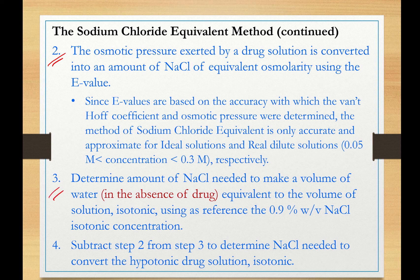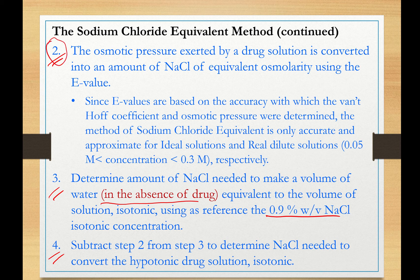In Step 3, we are going to determine the amount of sodium chloride needed to make a volume of water — equivalent to the volume of that solution, essentially in the absence of drug — isotonic, using isotonic saline as a reference. In Step 4, we are going to determine how much sodium chloride is needed to make the hypotonic drug solution isotonic. Step 2 calculates the osmotic pressure exerted by the drug in solution.